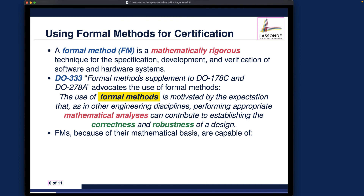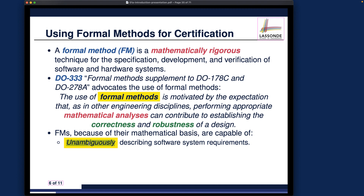Formal methods, because of their mathematical rigor, are capable of addressing both acceptance criteria. First, they allow you to unambiguously describe software and system requirements. Unambiguously means that when you specify requirements using math there should be no multiple interpretations. For example, the union operator in set theory is a well-defined mathematical operator with no ambiguity. Once you understand what a mathematical operator means, you will be able to understand precisely what a system is supposed to do.